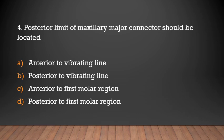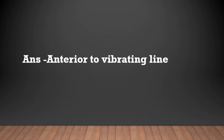Where should the posterior limit of the maxillary major connector be located? Options: anterior to the vibrating line, posterior to the vibrating line, anterior to the first molar region, or anterior to the first molar region and anterior to the vibrating line.